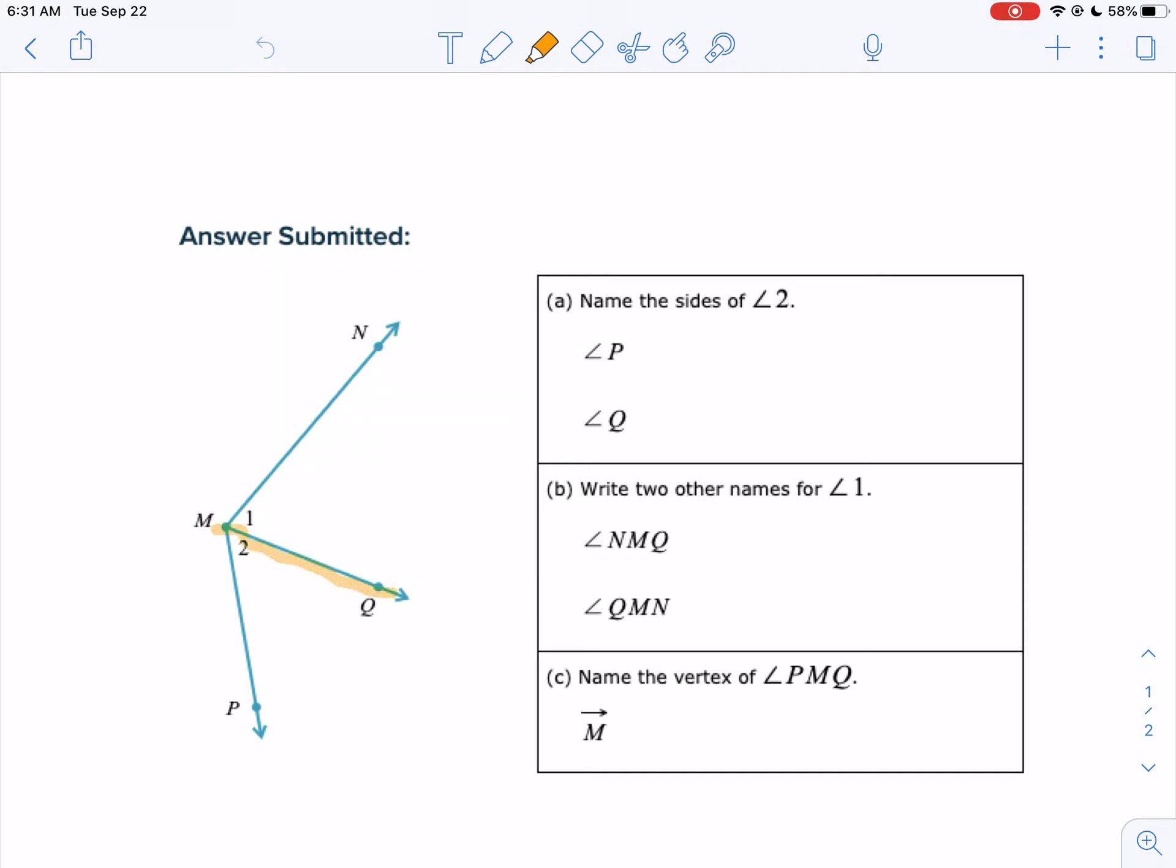So here's the side, and here's the side. Sides aren't angles, they're rays. So what we were looking for was ray MQ and ray MP. That's what we're looking for.